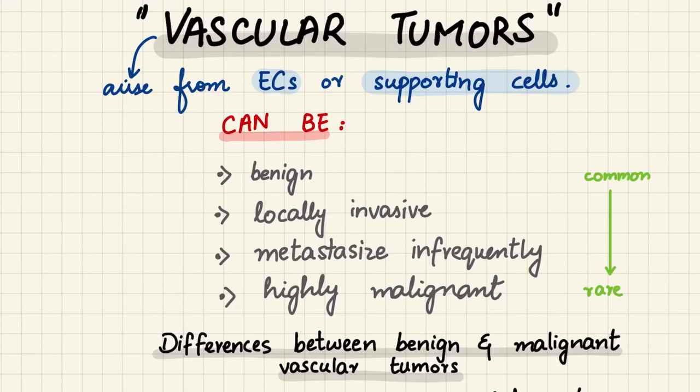Vascular tumors are tumors that originate from vascular tissue, meaning blood vessels and lymph vessels. They chiefly arise from endothelial cells, but can also arise from supporting or surrounding cells such as pericytes and smooth muscle cells. Vascular tumors can be benign, locally invasive, infrequently metastasizing, or highly malignant, ranging from the most common benign types to the rarest highly malignant ones.